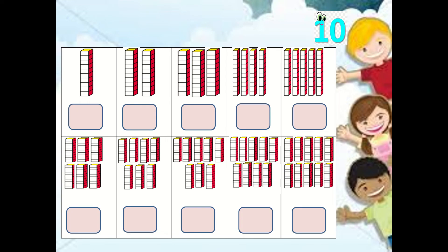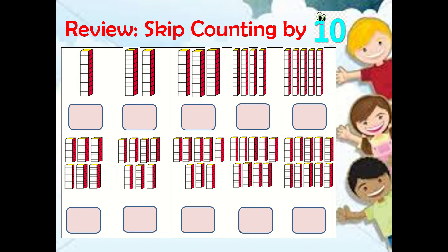Before we proceed to our next topic, let us review first our past lesson about skip counting by ten. Remember, one cube train is equal to ten. You can simply count the number of groups of cube trains and add zeros. So let us continue counting these cube trains by ten.